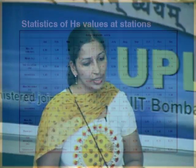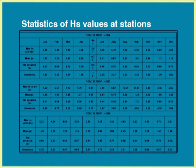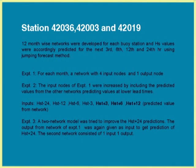For the other three stations with 12 years of exhaustive data, I first did a statistical study and saw that quite large variation exists in the data even between months. So, 12 month-wise networks were developed for each of the buoy stations — 42036, 42003, and 42019 — and again various iterations of input-output combinations were done to improve the higher lead time results of 12th and 24th hour.